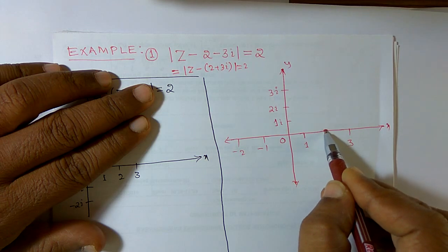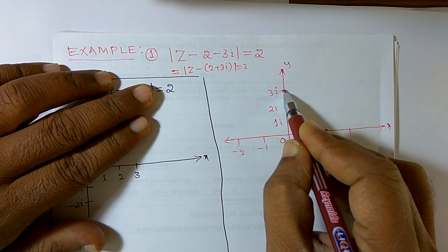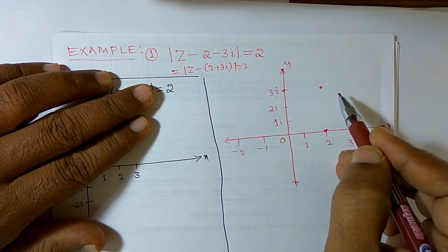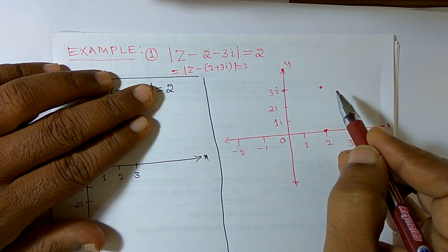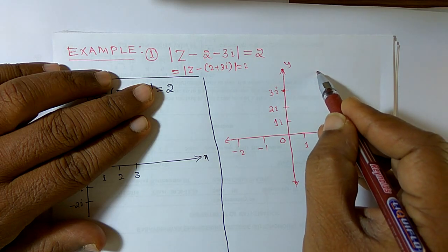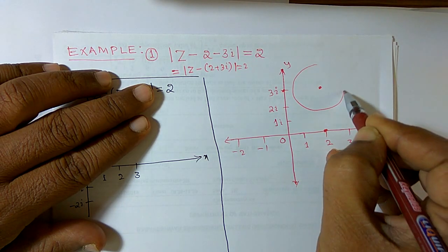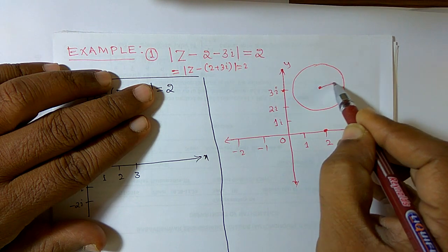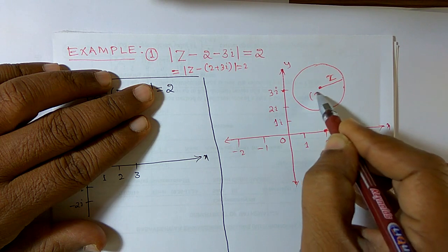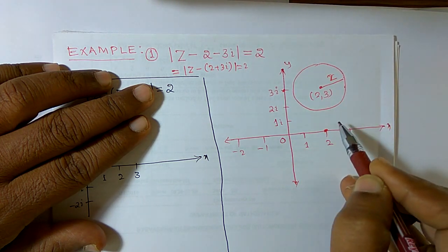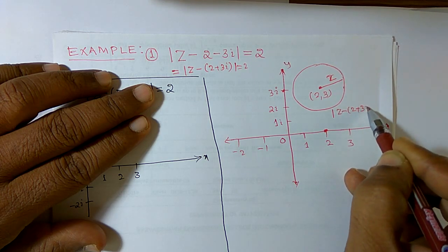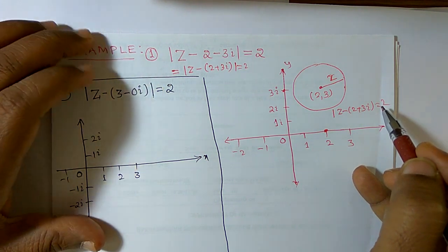I note down 2 on the real axis and 3 on the imaginary axis, giving the point (2, 3). I draw a circle about this point with radius 2. The equation of this circle is mod of z minus (2 plus 3i) is equal to 2.